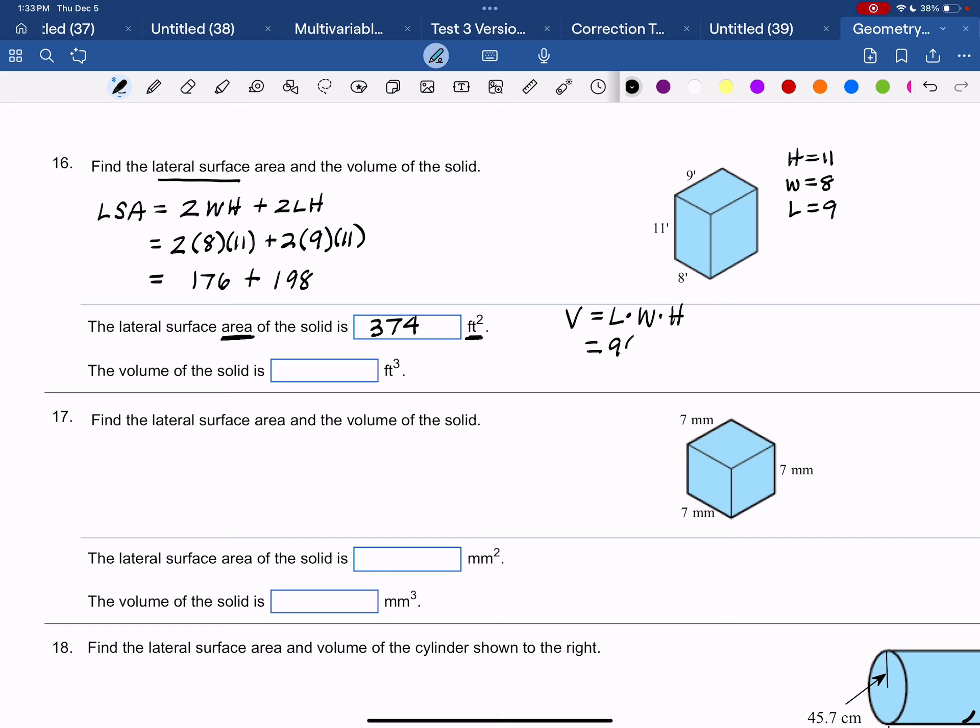9 times 8 times 11. Now you will need something in between, either parentheses or the dots. And you could even use the times, the x for times, in this situation, but never in an equation. So 9 times 8 times 11 is 792.